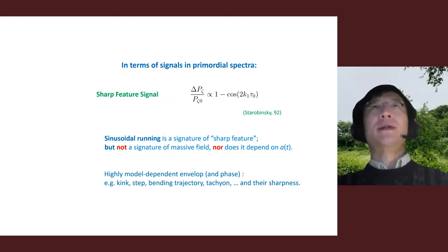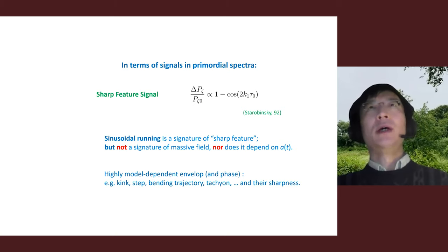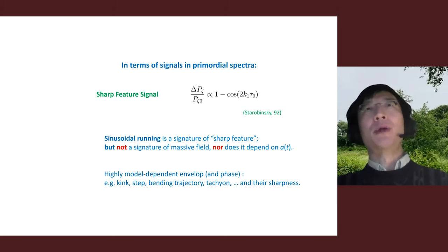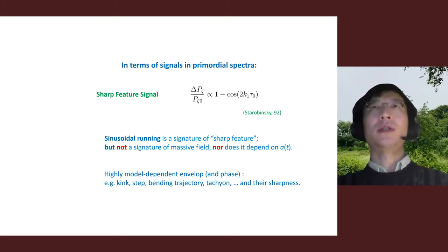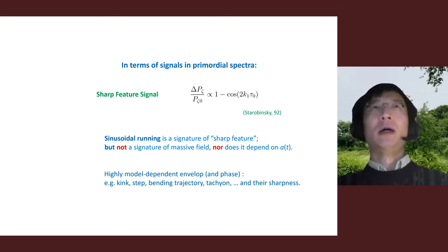In terms of their signals in primordial spectra, these two or three types of feature models all have distinct signatures. Sharp feature signals as a function of wave number typically have a sinusoidal running — τ₀ here is just a constant, the time of the feature in your model, and k is the wave number. This sinusoidal running can be regarded as a signature of sharp features if seen in density perturbations.